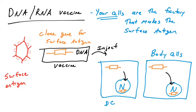The DNA has to find its way into the nucleus where it can be transcribed, and then translation occurs in the cytoplasm to make the protein. This is not trivial — convincing body cells to take in foreign DNA and transcribe and translate it into protein. There are some approved veterinary DNA vaccines, but as of the recording of this video, there are no FDA-approved human DNA vaccines.